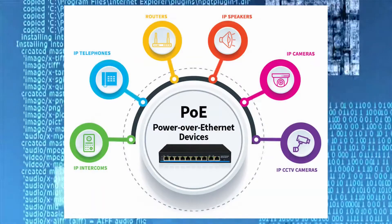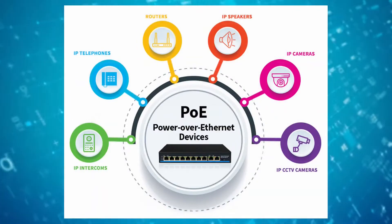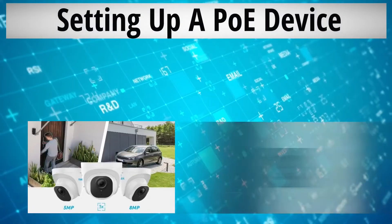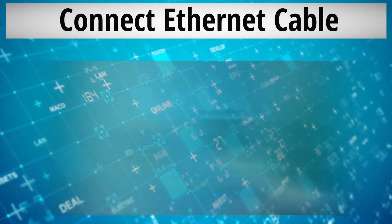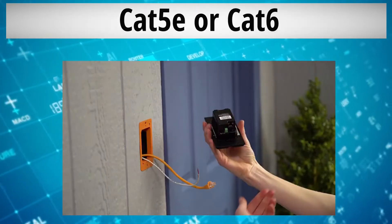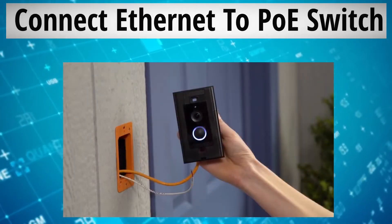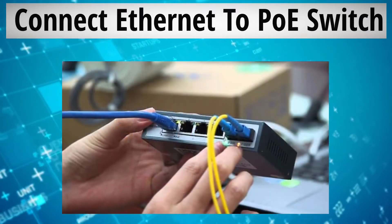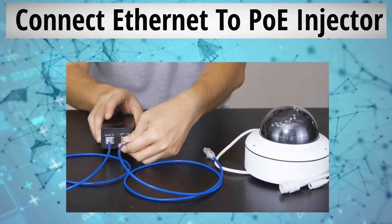For Power over Ethernet to work, you need a few things. First, you need a device that takes a PoE connection, like a security camera or maybe a video doorbell. Next, you want to connect that device with an Ethernet cable — Cat5e or Cat6. The other end of that cable will connect to a PoE switch or a PoE injector.